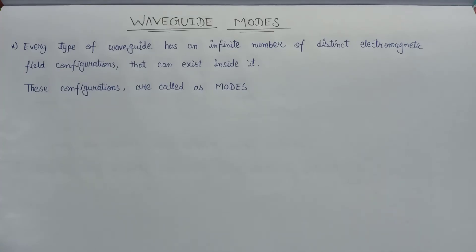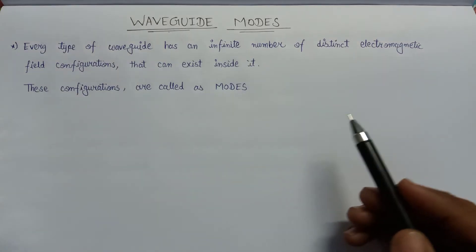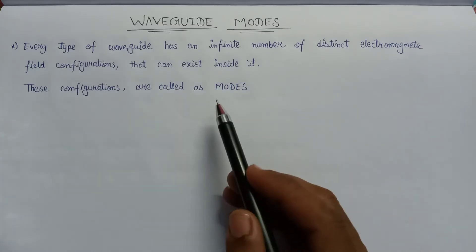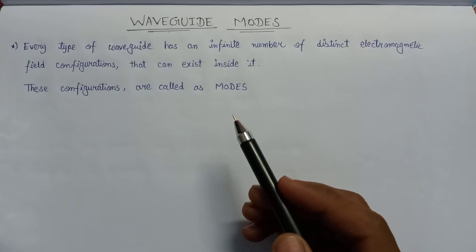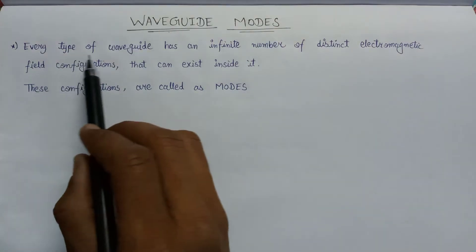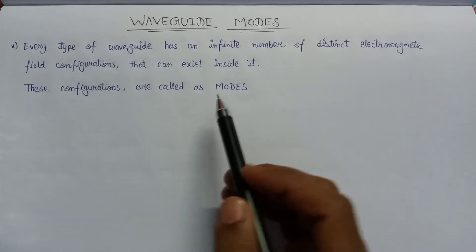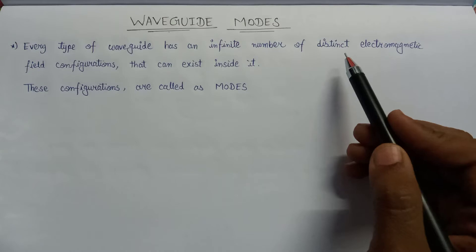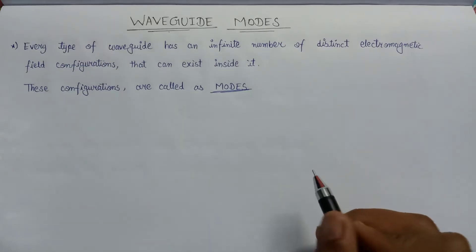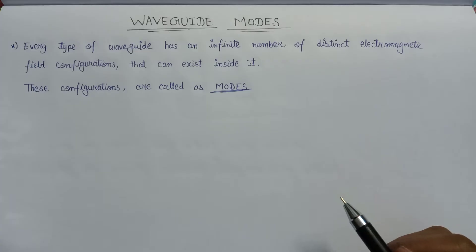Welcome. In this lecture we are going to discuss about waveguide modes. In the previous lecture we discussed the basic introduction of the waveguide and its general structure. In this lecture we are going to discuss about various modes that are possible in the waveguide. Each and every waveguide has an infinite number of distinct electromagnetic field configurations that can exist inside it, and these distinct configurations are termed as modes. In general, each waveguide has five possible types of modes.